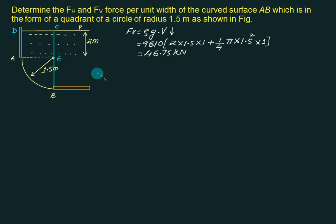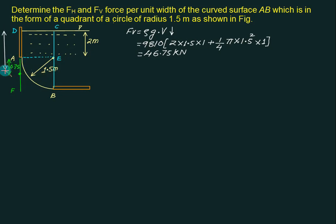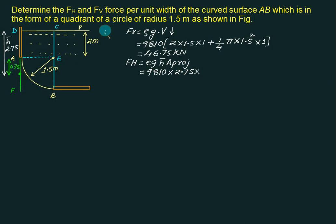To calculate the horizontal force FH, we project the curved surface AB onto a vertical surface, represented by AF, which has a height of 1.5 meter. The centroid lies halfway at point G, which is 1.5/2 = 0.75 meter from A. Measuring H-bar from the free surface: 0.75 + 2 = 2.75 meter. FH = ρg × H-bar × A projected = 9810 × 2.75 × (1.5 × 1) = 40.66 kilonewton.